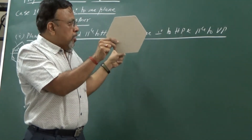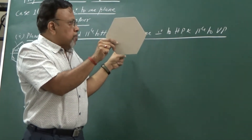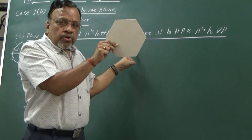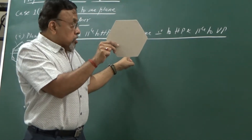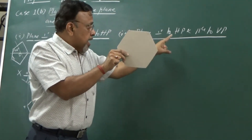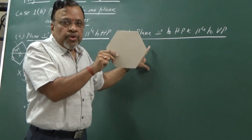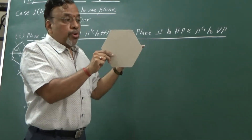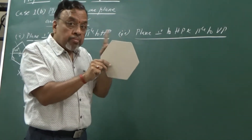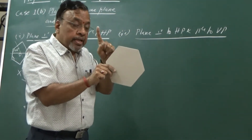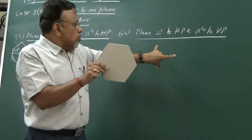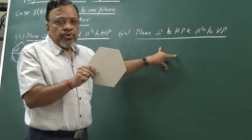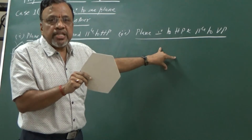Since it is parallel to VP, the true shape and size will be seen in the front view. Since I can see the true shape and size in the front view, I need to start from the front view. Remember, in the front view, we know only HP details.